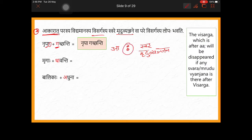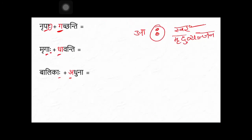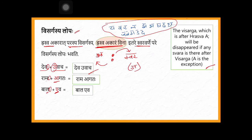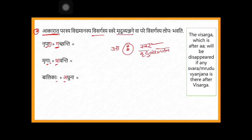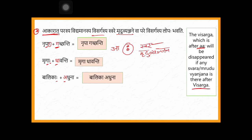Next: mrgaha dhavanti — there also mrgaha, visarga, and then akara, so 'mrgaha dhavanti'. Then 'balikaha adhuna' — any swara can be there. So 'balikaha adhuna'. In the first type: any swara can be there after visarga but 'a' should not be there, and before visarga only 'a' should be there. In the second type: the visarga which is after dirga 'a' will disappear if any swara or mrudhu vyanjana is there after visarga. These are the two types of visargasya lopaha.